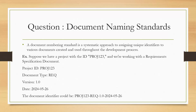Question 11: What is meant by document naming standard? A document naming standard is a systematic approach to assigning unique identifiers to various documents created throughout the development process. For example, for a project with ID PROJ123 working on a requirements specification document: project ID is PROJ123, document type is REQ, version is 1.0, and today's date. The document identifier would be PROJ123-REQ-1.0-DATE.